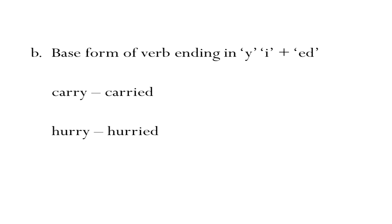Now, if you have a verb ending in -y, you have to remove the y, replace it with i, and add -ed to it. For instance, the verb carry — C-A-R-R-Y — ends with the letter y. To form the past form, remove the y, replace it with i, and add -ed. So carry becomes carried.